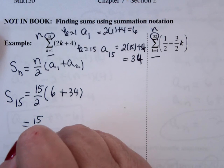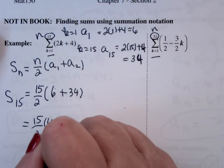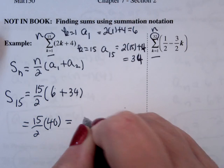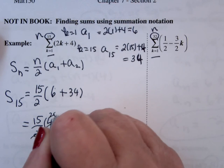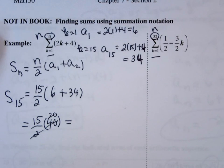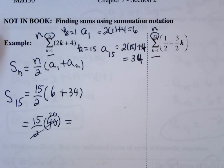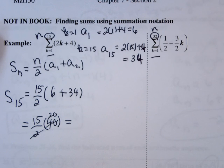15 divided by 2 times 40, which is 15 times 20 is 300.